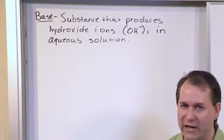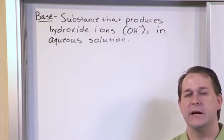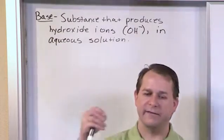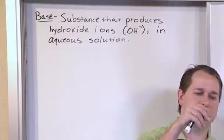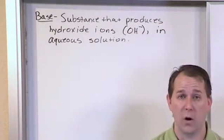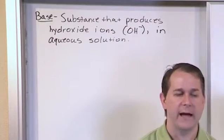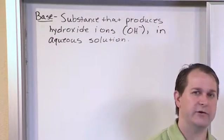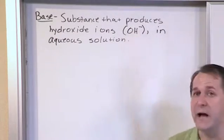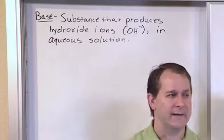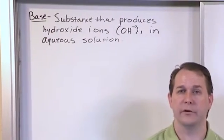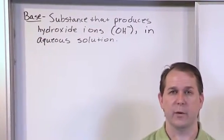So that's called a hydroxide ion. When we say it produces hydroxide ions, that means if I sprinkle the substance that I'm calling a base into water, it should dissociate and some of the stuff should go out as OH negative ions, and then whatever else the base is made of will also go into solution as well.